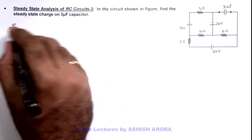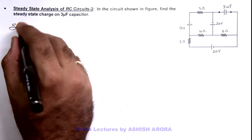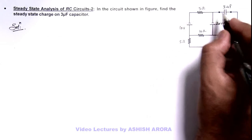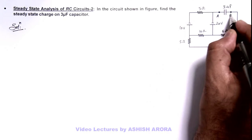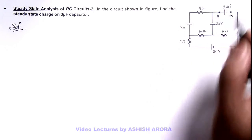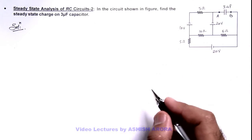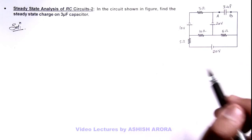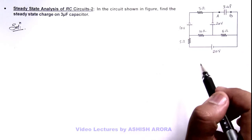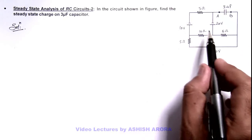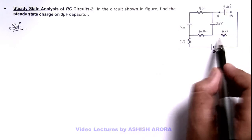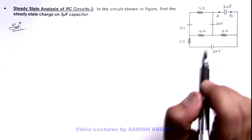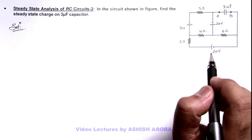We need to find out the potential difference across the terminals of the capacitor, say these are A and B. To find the potential difference across this capacitor, we first need to calculate the current in the 5 ohm resistance, then we can calculate it using KVL.